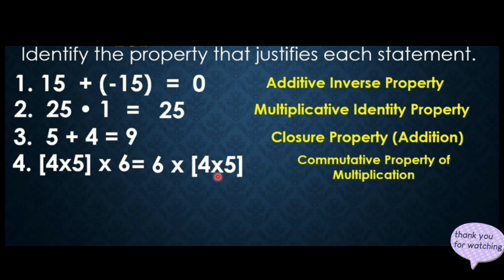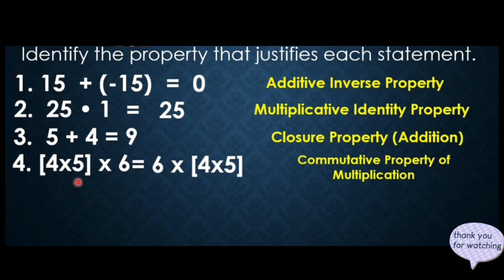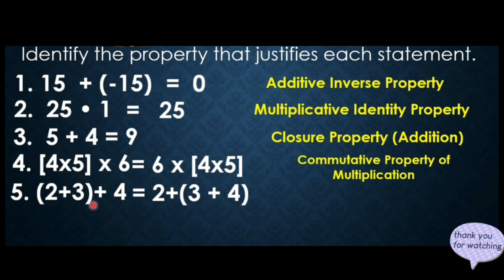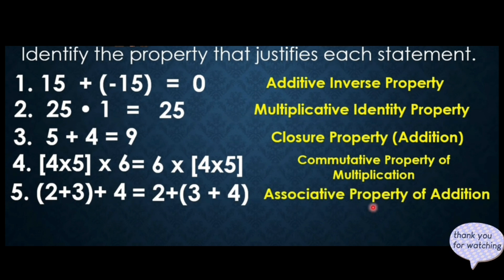You have to be careful with number 4 because it looks confusing. It is commutative property, not associative property, because the group did not change — 4 and 5 are still in one quantity. What changed is only their order: we exchanged 6 and the quantity (4 times 5). The order changed, not the group. Number 5: the quantity (2 plus 3) plus 4 equals 2 plus the quantity (3 plus 4). This time we are changing the group, so this is associative property of addition.